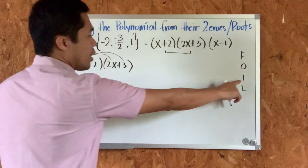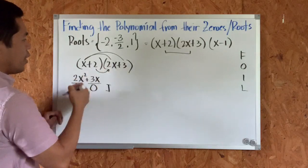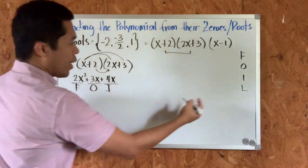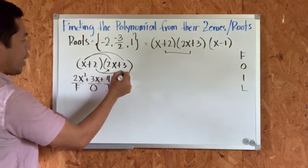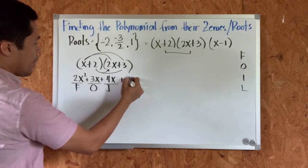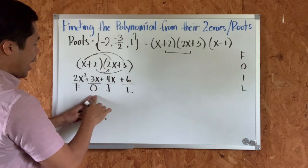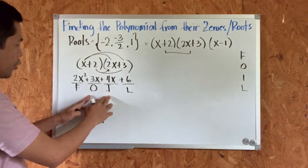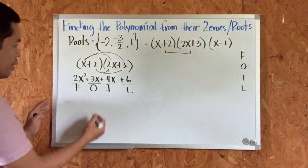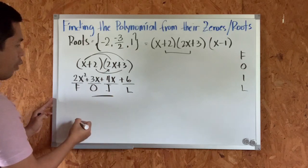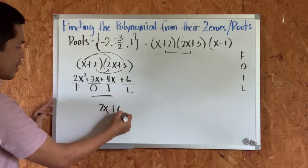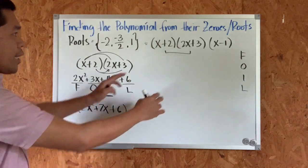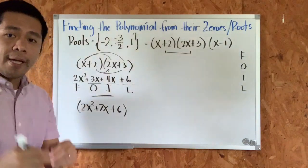The inner terms are two and 2x; two times 2x equals 4x. The last terms are two and positive three; two times three equals positive six. We can simplify by combining the outer and inner terms — 3x and 4x — which gives us 7x. So the product of the first two binomials is 2x squared plus 7x plus six.